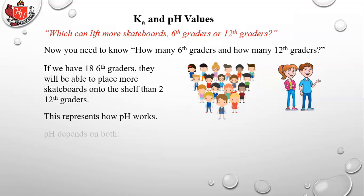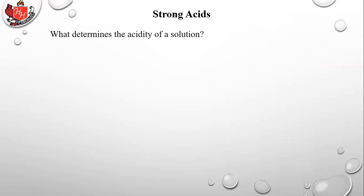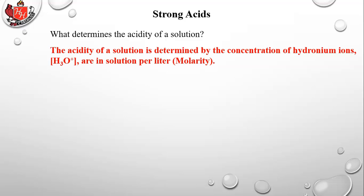This is how pH works: pH depends both on the intrinsic strength of the acid (the Ka) and the amount of acid measured in molar concentration (M). You can produce a more acidic solution with more H3O+ ions by using a large amount of a weak acid than by using only a small amount of a strong acid. The acidity of a solution is determined by the concentration of hydronium ions H3O+ per liter — that's molarity.